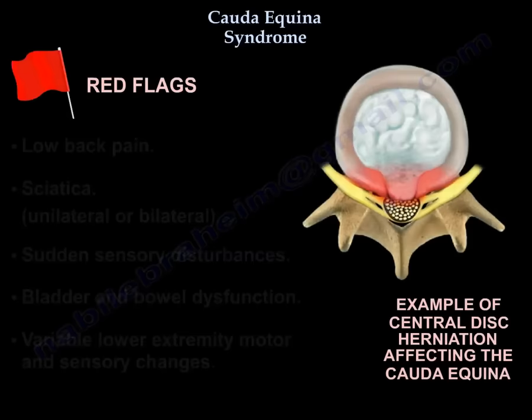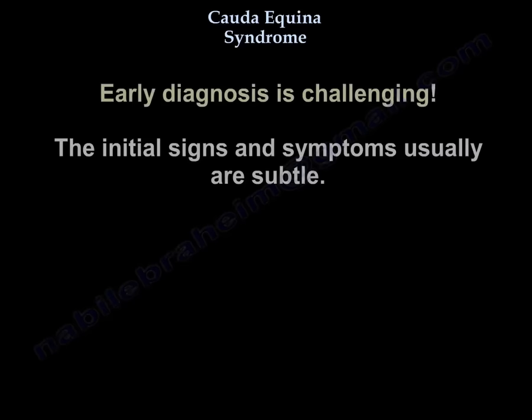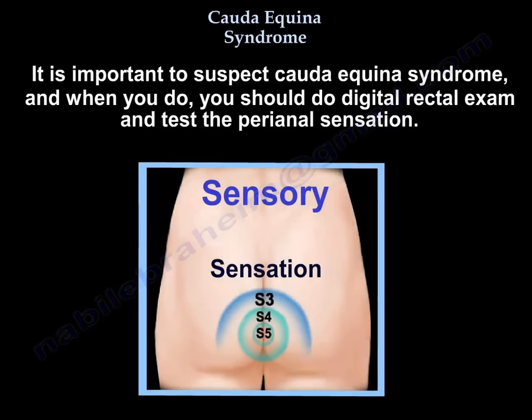The red flags that indicate Cauda Equina Syndrome include low back pain, sciatica unilateral or bilateral, sudden sensory disturbance, bladder and bowel dysfunction, and variable lower extremity motor and sensory changes. Early diagnosis is challenging because the initial signs and symptoms are usually subtle. It is important to suspect Cauda Equina Syndrome when these red flags are present.